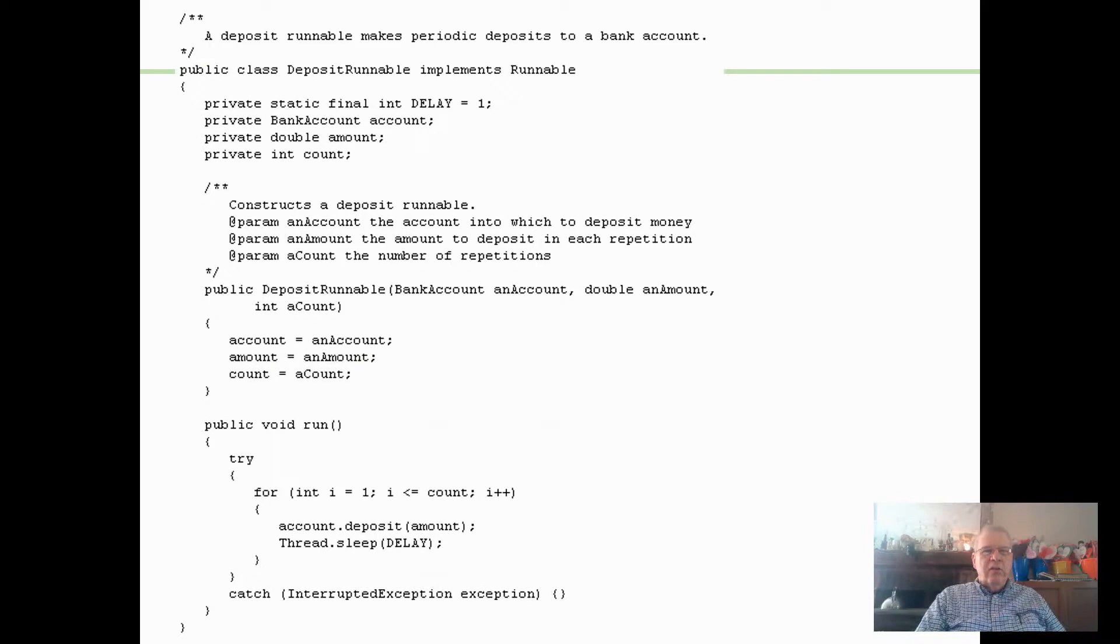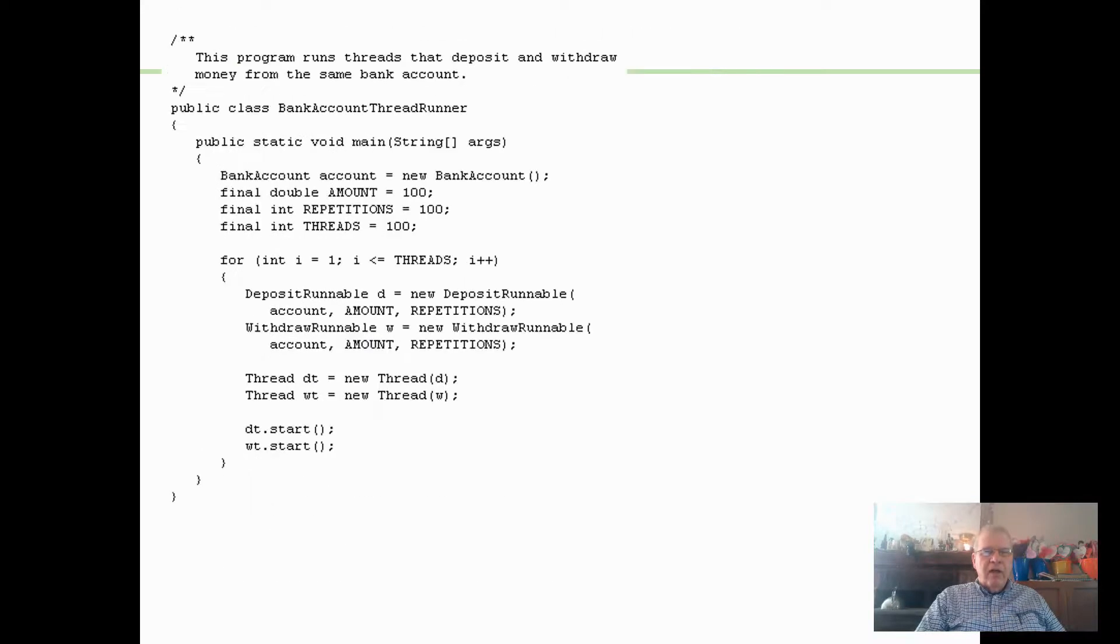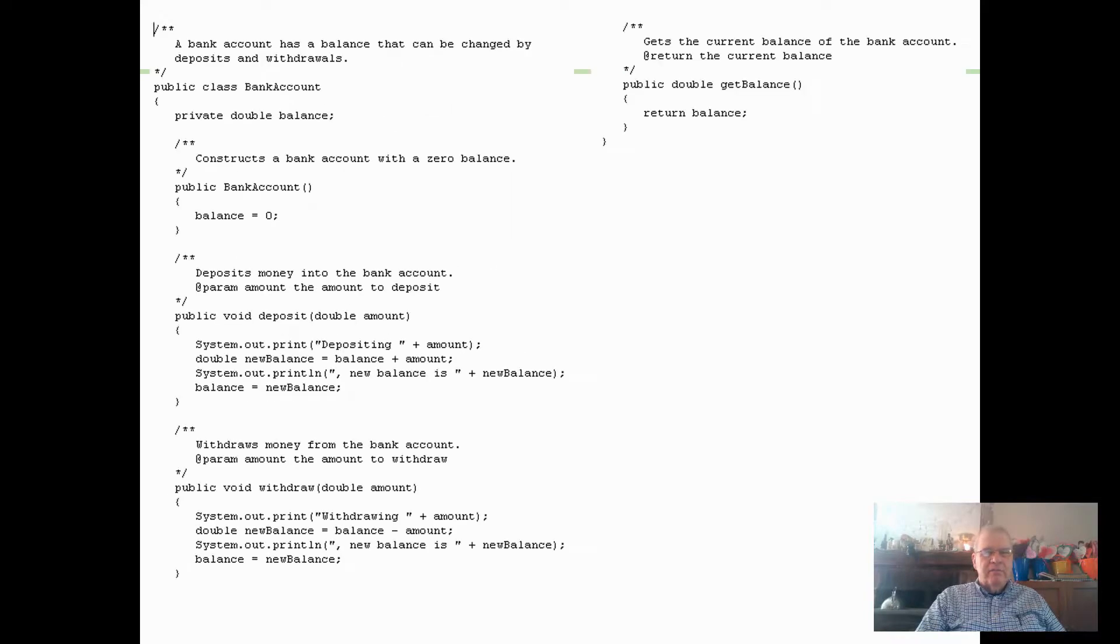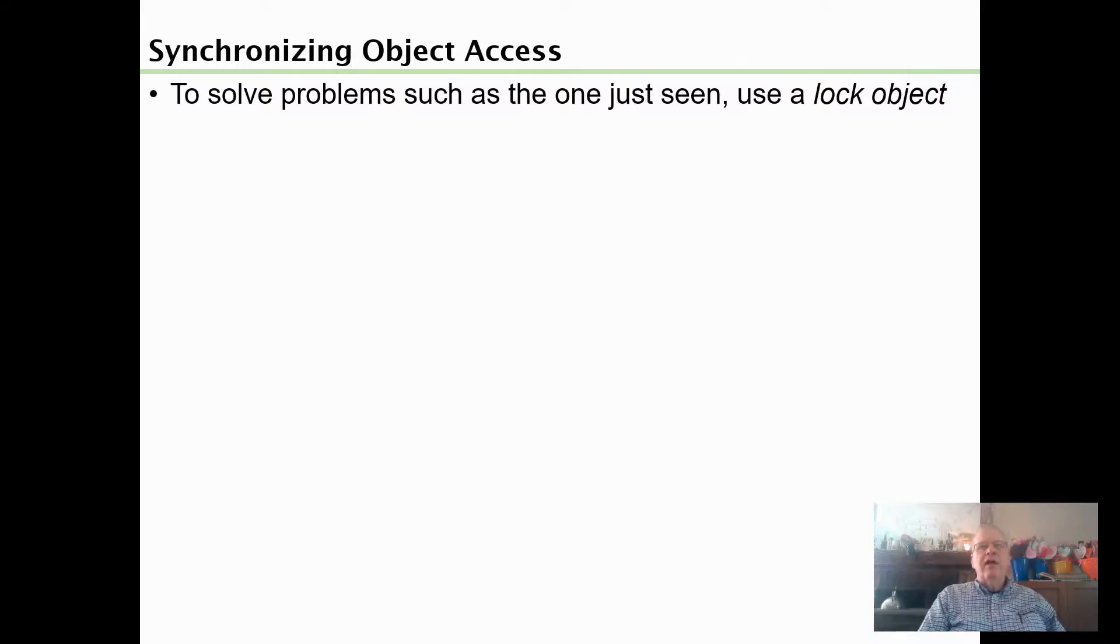Here's deposit runnable making periodic bank account deposits, and here's withdraw runnable withdrawing. Here's the driver. The bank account has a balance that can be changed by them, and so we have some messed up output. So how do we synchronize that? Well, here's an example of a second example of how we introduce new features, new constructs to prevent certain bad conditions from happening.